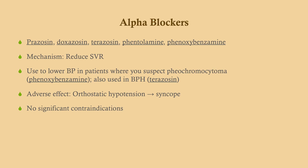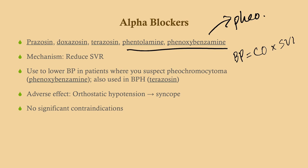Speaking of the alpha blockers, there are a number of them: prazosin, doxazosin, terazosin, and then the irreversible ones — phentolamine and phenoxybenzamine — which are very useful for pheochromocytoma. The mechanism is to reduce systemic vascular resistance (SVR). Blood pressure equals cardiac output times systemic vascular resistance, so if we lower SVR, we lower blood pressure. This is the first drug you go for when you suspect pheochromocytoma.